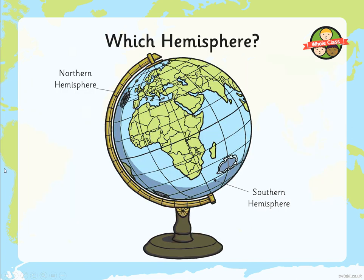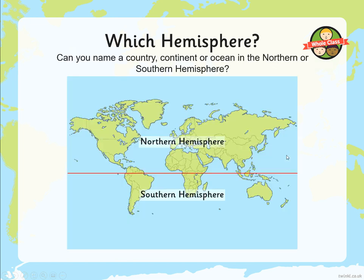If we have a look on this globe, the Northern Hemisphere is this section above this line here, which is the equator. The equator doesn't really exist, but it's a point that is halfway between the North Pole and the South Pole. The Southern Hemisphere is all the area underneath the equator. Have a go at naming any country, continent or ocean in either the Northern or Southern Hemisphere, and if you can say which hemisphere it's in, even better.